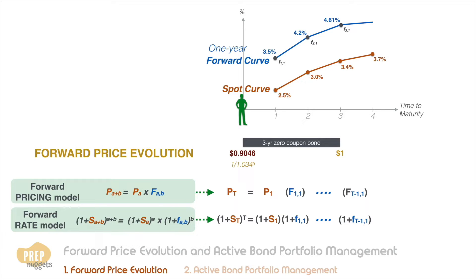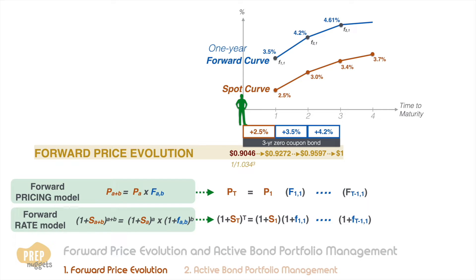Based on the spot and forward rates, he would expect the price to increase 2.5 percent in the first year, 3.5 percent in the second, and 4.2 percent in the third. This also means he expects the price of the zero coupon bond to be 0.9272 after the first year, 0.9597 after the second, and of course one dollar at maturity. This is the expected price evolution of the bond at the point when he bought it.